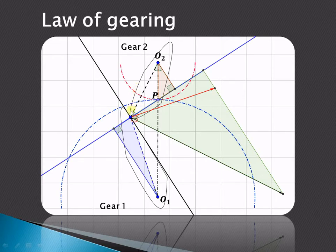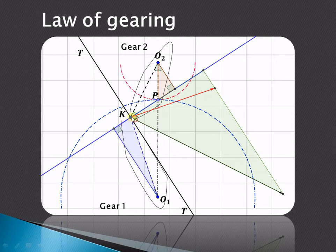Now let us assume that these two gear teeth are in contact with each other at a particular point — let us call this point K. Draw a tangent T passing through this point of contact of the two mating gears. Similarly, draw a common normal N'N' passing through point K. This common normal must also pass through the pitch point P.